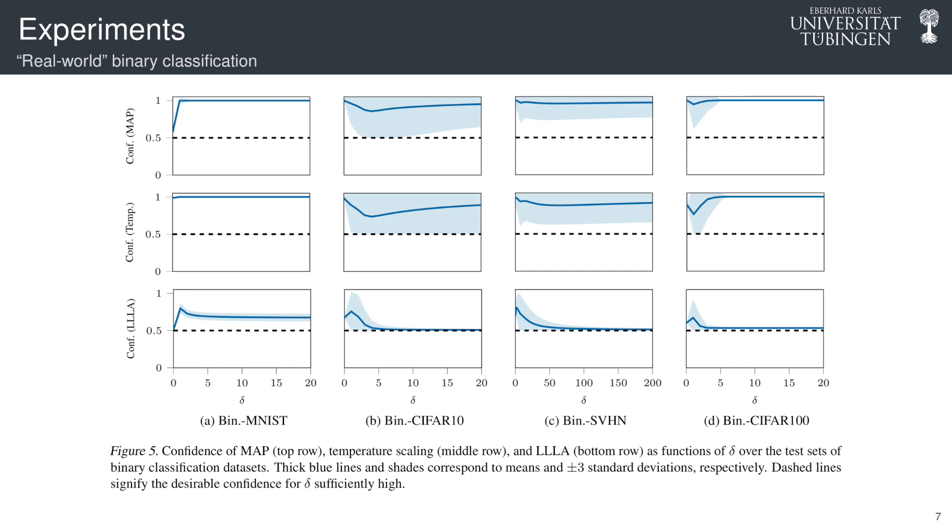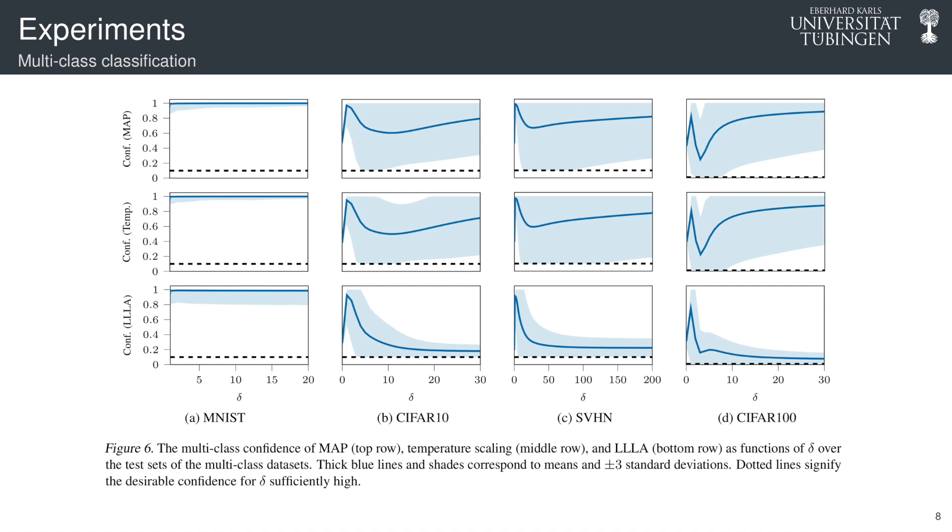Meanwhile, on point estimation, let's say using MAP estimate and temperature scaling, they achieve confidence close to one as δ increases.